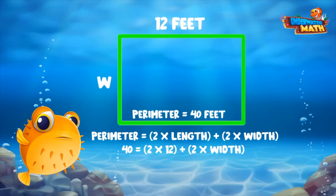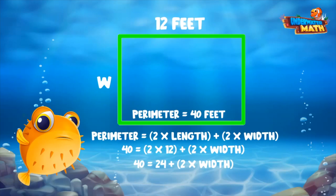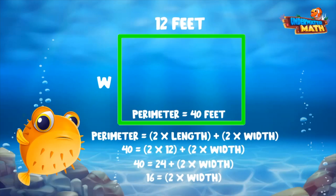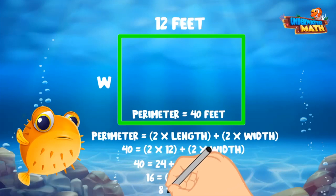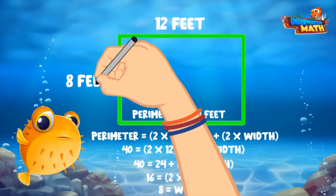Now we can solve for the width. 2 times 12 equals 24. Let's subtract that from our total: 40 minus 24 equals 16. Now we have 16 equals 2 times W. I know that the two widths together make 16, so if I divide 16 in half, I will know the width for each side. 16 divided by 2 equals 8. The width is 8.